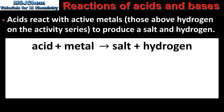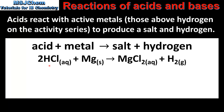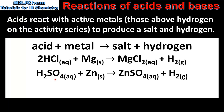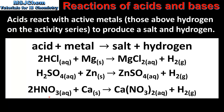And finally we look at the reactions between acids and metals. Acids react with active metals, which are those above hydrogen on the activity series, to produce a salt and hydrogen. In our first example hydrochloric acid reacts with magnesium to form magnesium chloride and hydrogen. In our second example sulfuric acid reacts with zinc to produce zinc sulfate and hydrogen. In our final example nitric acid reacts with calcium to produce calcium nitrate and hydrogen.